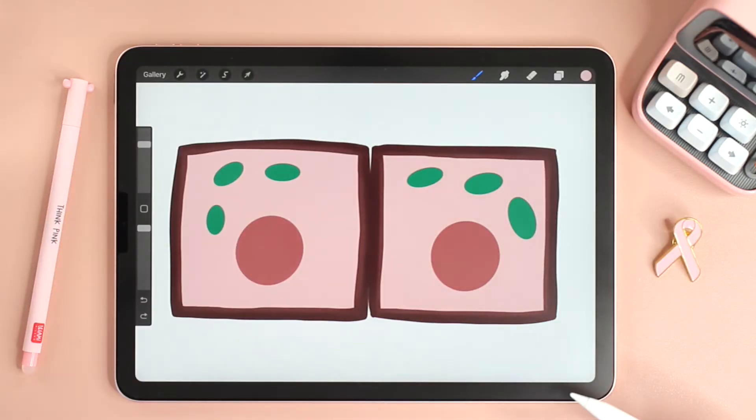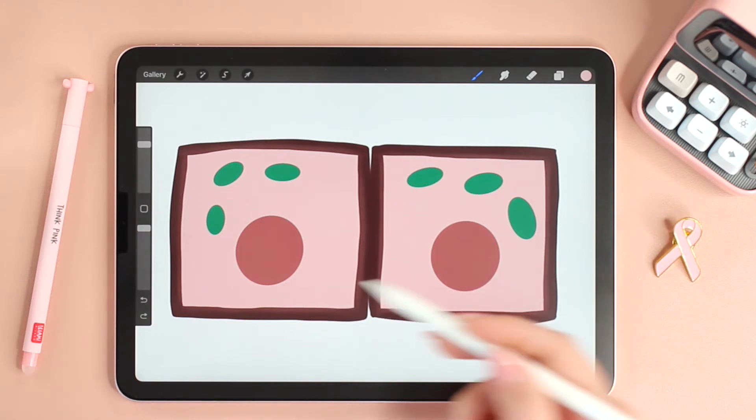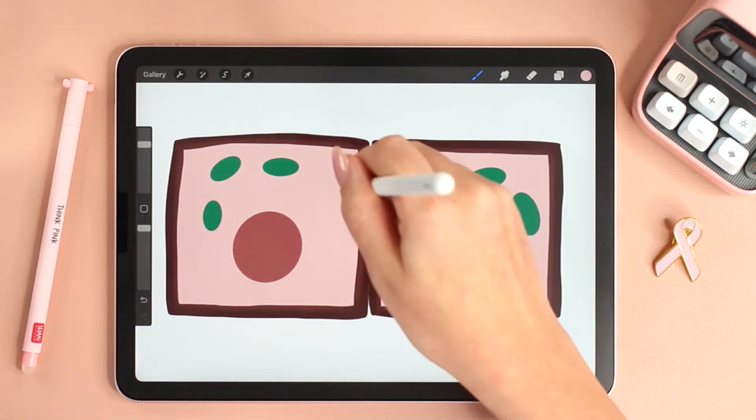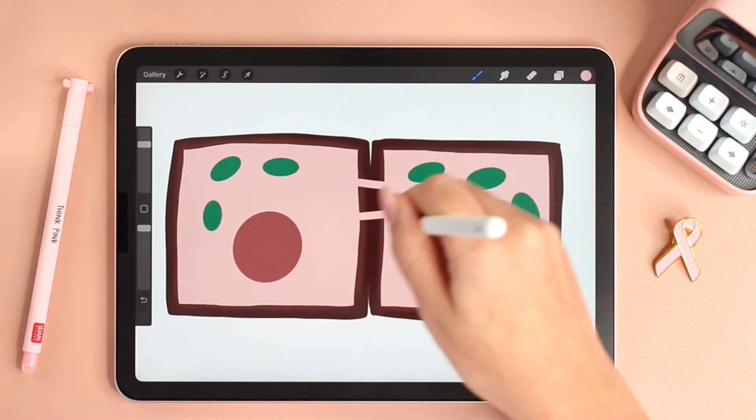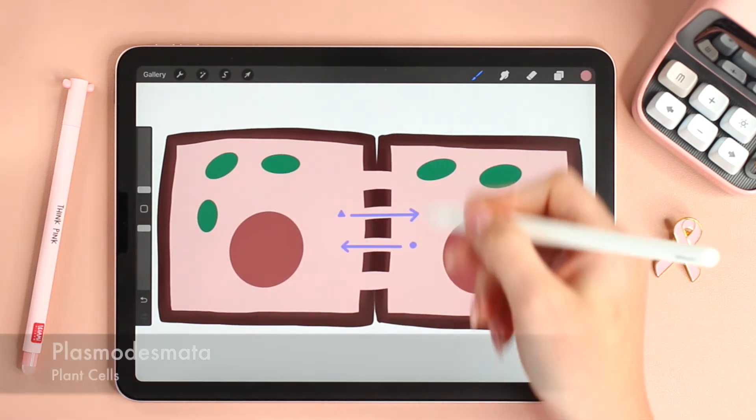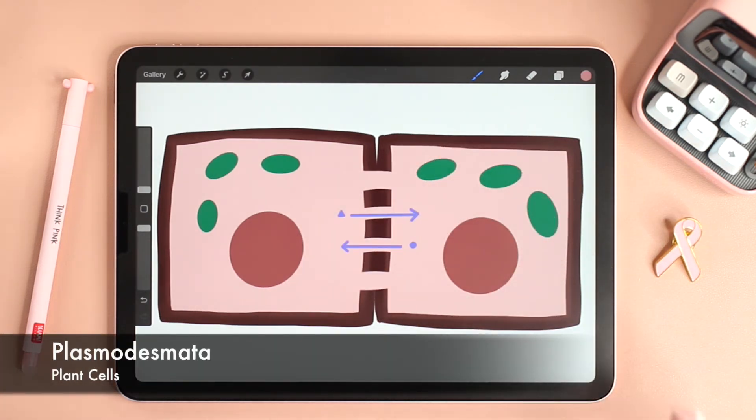Let's start with plant cells. As you can see here we have two plant cells and we can clearly see that they both have cell walls. Now because plants have cell walls, does this mean that they can't communicate? The answer is no, because these cells will still be able to communicate with one another because of the presence of holes on the cell wall that allow materials to be exchanged between the cells. These channels are called plasmodesmata, singular plasmodesma.